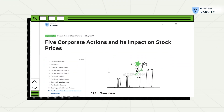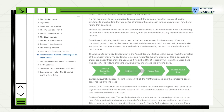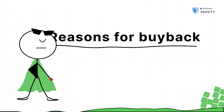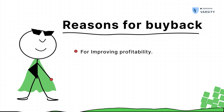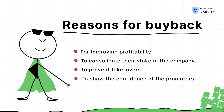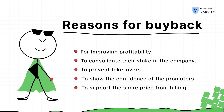We have a really nice article so you can understand how this works in detail. There could be many reasons why a corporate is performing a buyback: to improve profitability on a per-share basis, to consolidate their stake in the company, to prevent other companies from taking over, to show confidence of the promoters about the company, and to support the share price from declining in the market. Generally speaking, a buyback shows confidence of the company in its own business and hence is a bullish sign.